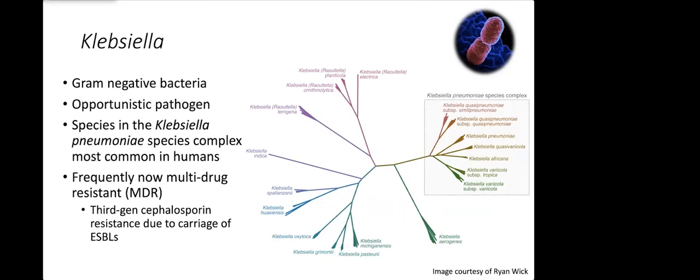Third generation cephalosporin resistance is becoming a real problem here in Australia and that's usually mediated by the carriage of extended spectrum beta-lactamases or ESBLs in Klebsiella, which are frequently found on plasmids.